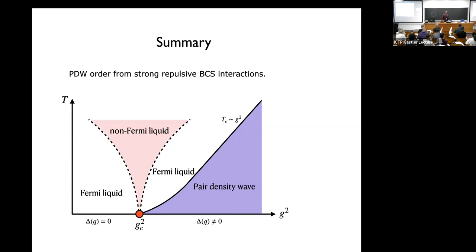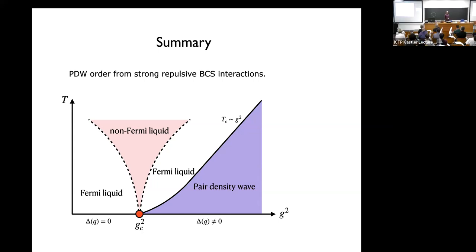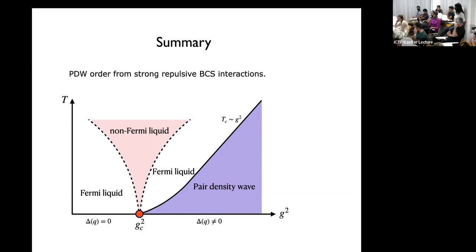A further question: in experiments like those of Seamus Davis showing pair density waves with STM alongside superconductivity, is the pair density wave a spectator or an active participant? Probably a spectator, I would say. The notion that it is the 'mother of all orders' I don't necessarily subscribe to — it might be a small fraction of something on top of a uniform component. That's my speculation; I could be wrong.